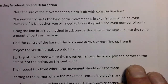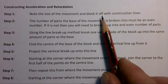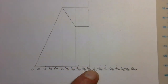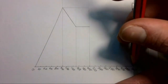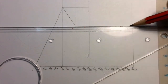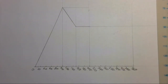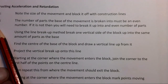Step one is to note the size of the movement and block it off with construction lines. Our movement on the horizontal is between 200 and 360 degrees. We draw a construction line up from 360 degrees and another line across, creating the block in which our motion will happen. Step one is now complete.